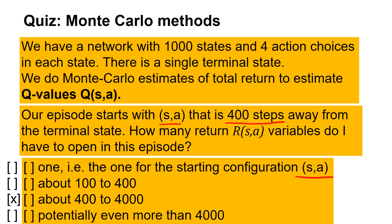Why is this? Well, on the way, when you explore the graph, you can start to estimate new return variables — all S prime, A prime that you find on the way. So our episode is 400 steps away, so it's at least 400 return variables that you will touch. It might be more, but it cannot be more than 4000 because in total we only have 4000 state-action pairs.